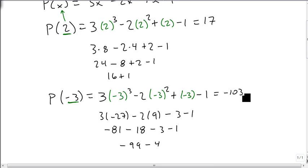This gives us -81 - 18 - 3 - 1 = -103. So we've now evaluated our function for both 2 and -3. Notice, this is important: I put the negative inside parentheses, so the power affected the sign because it was inside the parentheses.